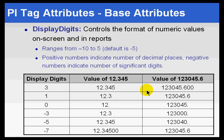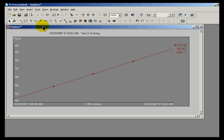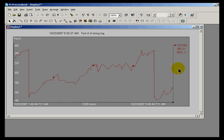The DisplayDigits attribute controls how we display data by default in ProcessBook. You have a field that takes either a positive or a negative integer. Positive indicates number of decimal places; negative indicates significant digits. For example, a positive five would indicate five decimal places for display in ProcessBook. If I look at ProcessBook right now at my PI tag, this is showing as five significant digits, so this is probably set up with a DisplayDigits of negative five.